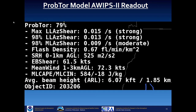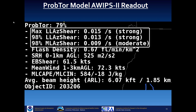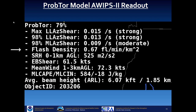PROB TOR is also shown. Satellite information is not included — there is no cloud growth rate. However, azimuthal shear is quantified as weak, moderate, and strong. The readout also includes flash density, storm relative helicity, environmental bulk shear, mean wind, mixed layer CAPE, and mixed layer CIN. The average beam height is also shown, so you know at what level the radar object is being displayed.